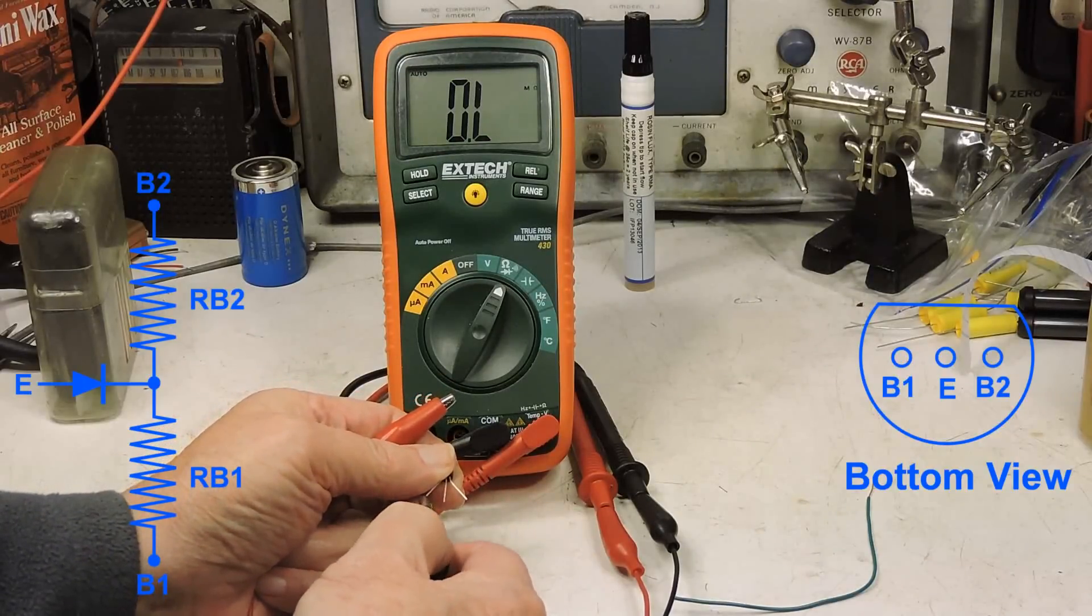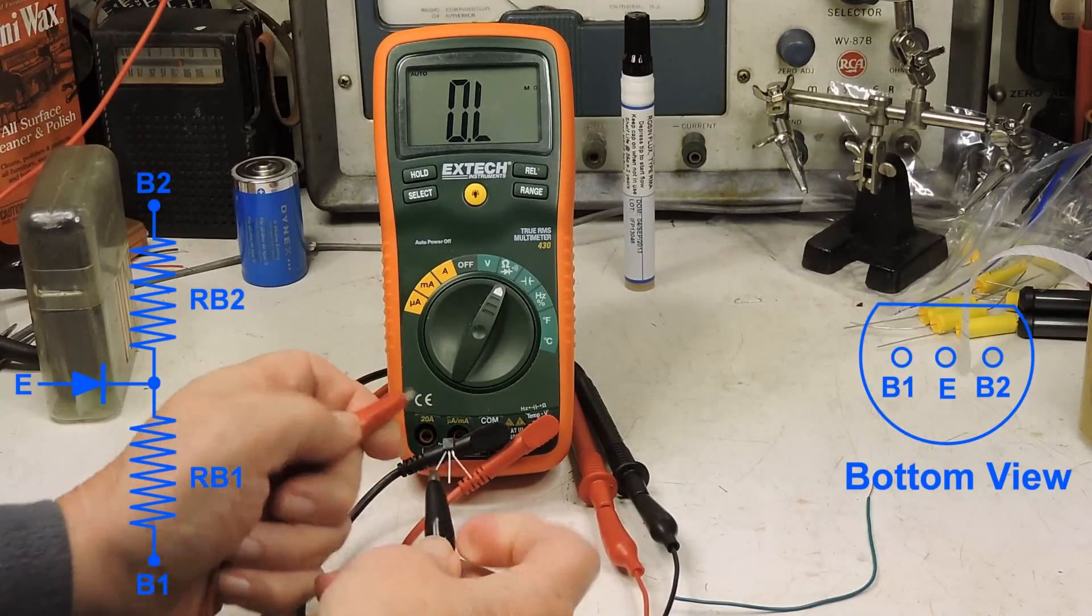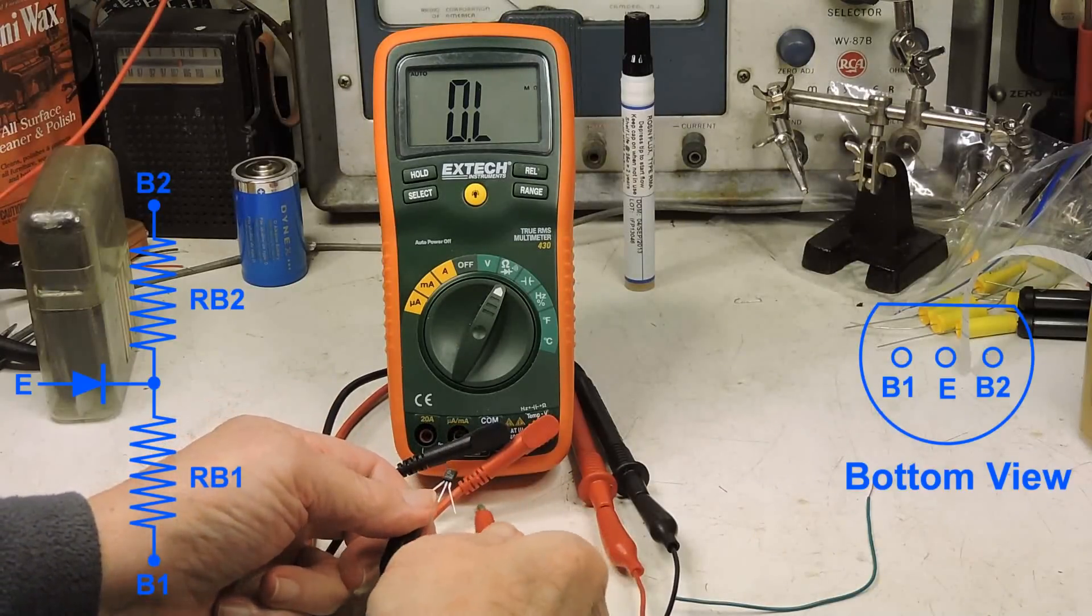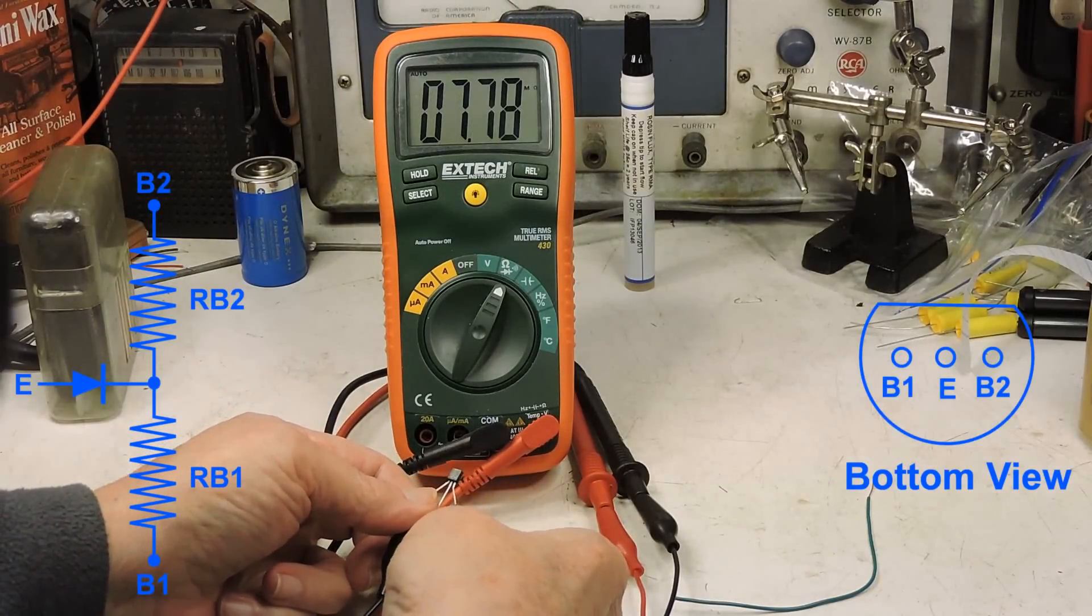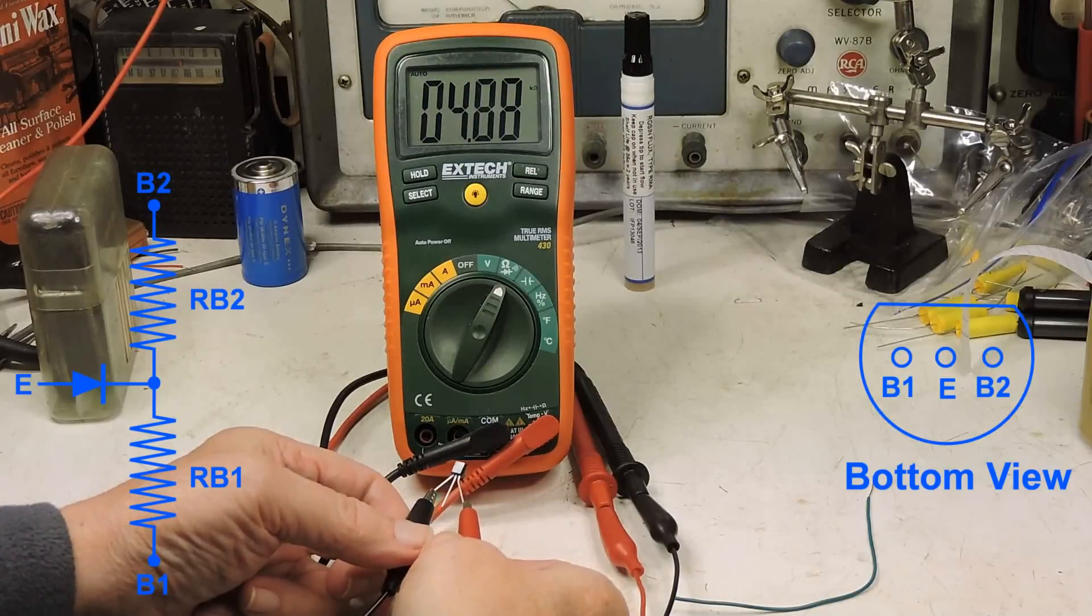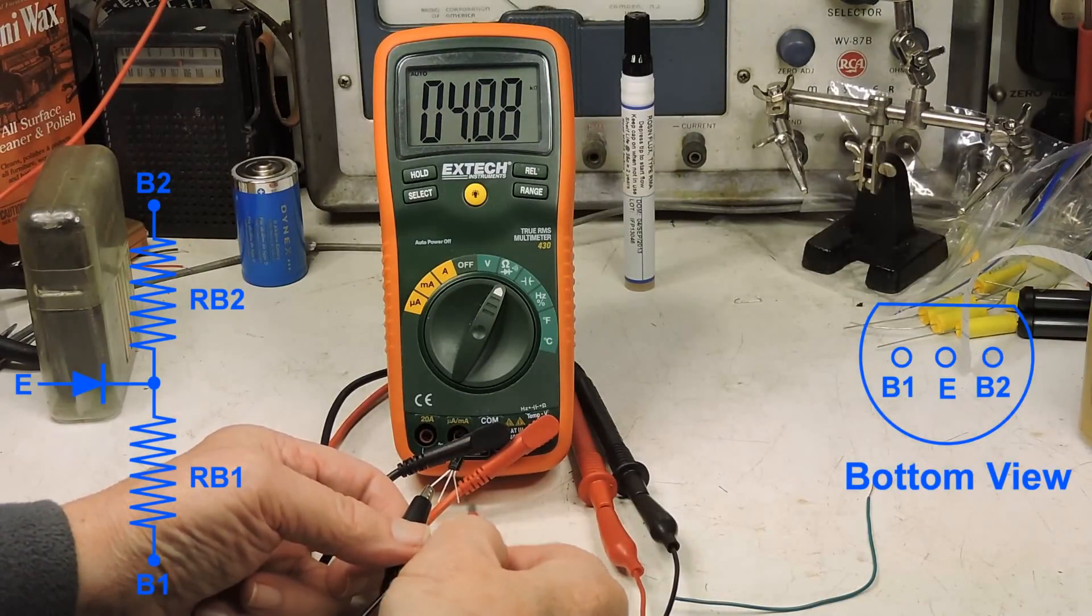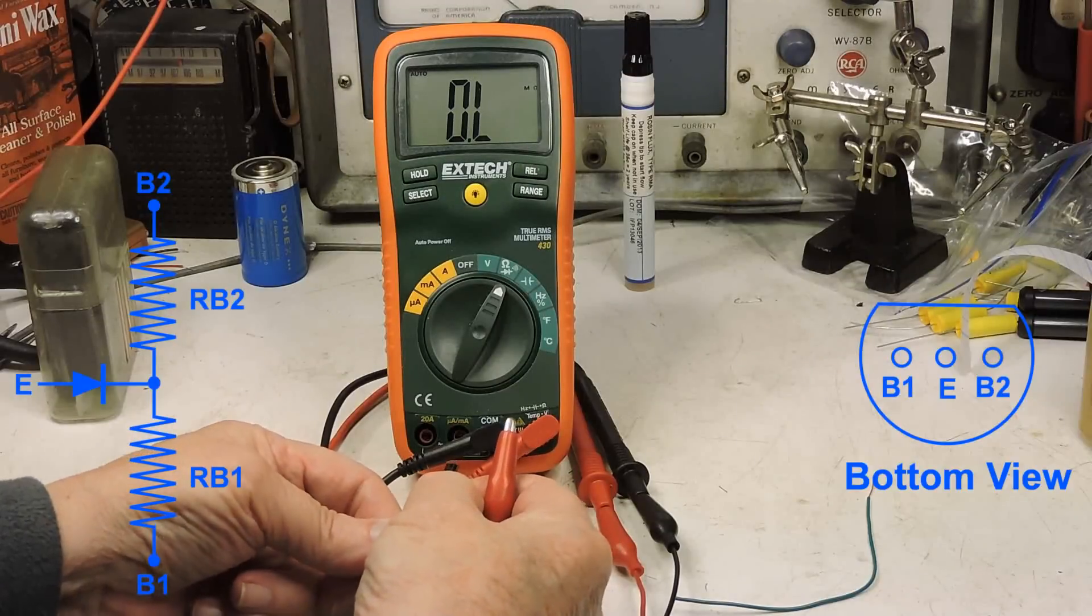Now I'm going to reverse the leads, negative on B1, positive on B2, and again, just a little under 5,000 ohms.